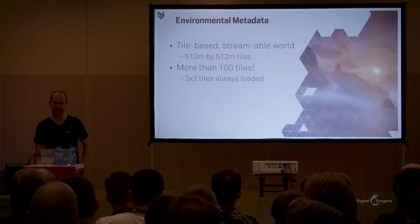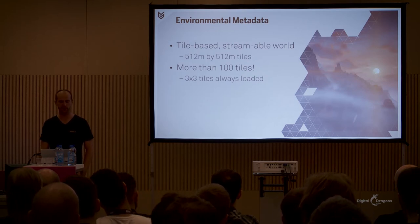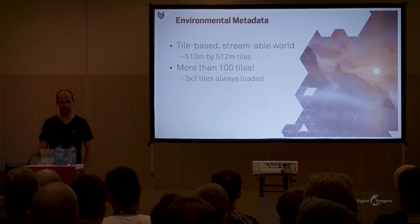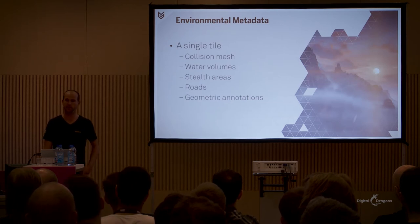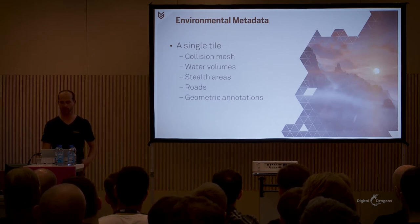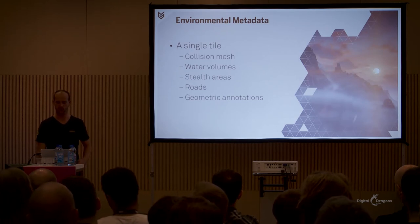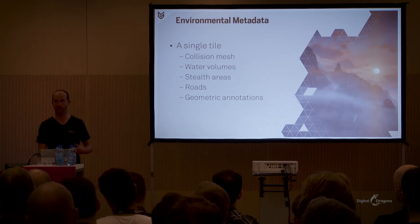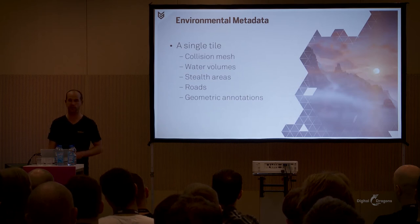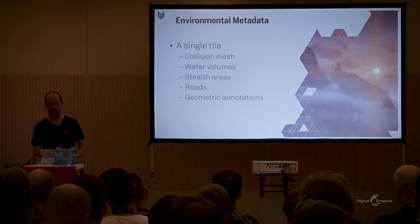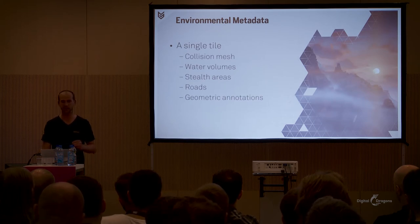I'd first like to explain very briefly how we annotate the world with environmental metadata. The world of Horizon is split up into big tiles — each tile is 512 by 512 meters, and currently we have more than 100 of them. Each tile is streamable, and 3x3 tiles around Aloy's position are always loaded. A single tile contains various environmental metadata: the most common is the collision mesh, which tells us where Aloy can and cannot go and provides information about surface materials for impact sounds. We also have volumes indicating where you can swim, volumes defining where Aloy can climb, road information with widths and connections, and annotated geometry that identifies traversable routes.